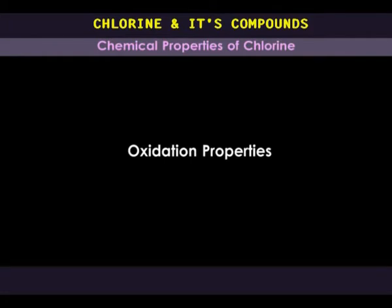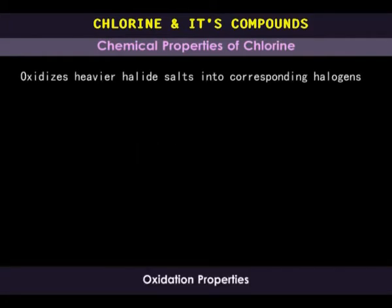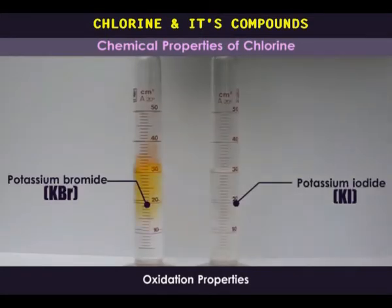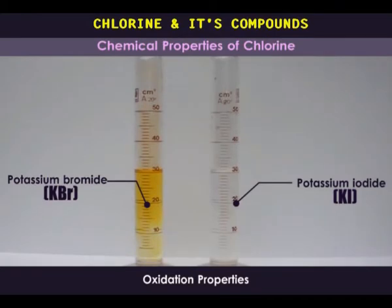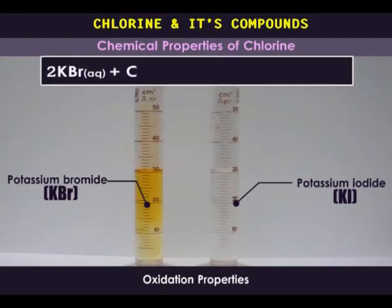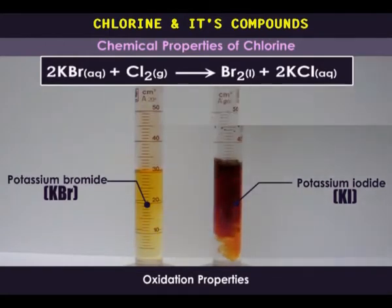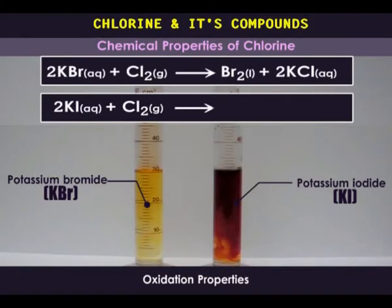Oxidation properties. Chlorine oxidizes heavier halide salts to corresponding halogens. When chlorine gas is bubbled through a colorless solution of potassium bromide, the color of the solution changes to deep yellow or reddish brown, due to the formation of elemental bromine as it is displaced from potassium bromide. When chlorine gas is bubbled through a colorless solution of potassium iodide, the color of the solution changes to dark brown, followed by the deposition of a black solid, because chlorine displaces iodine from potassium iodide.